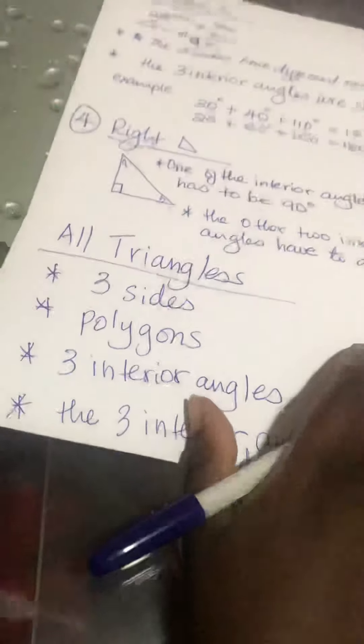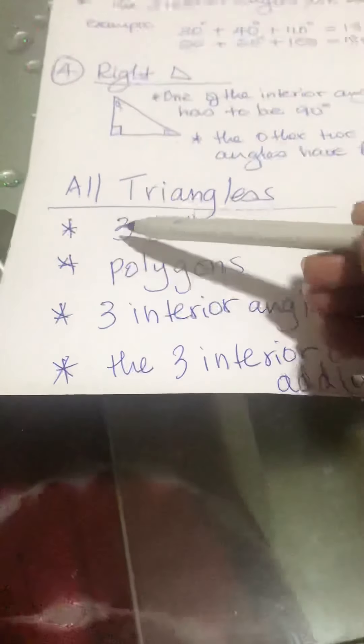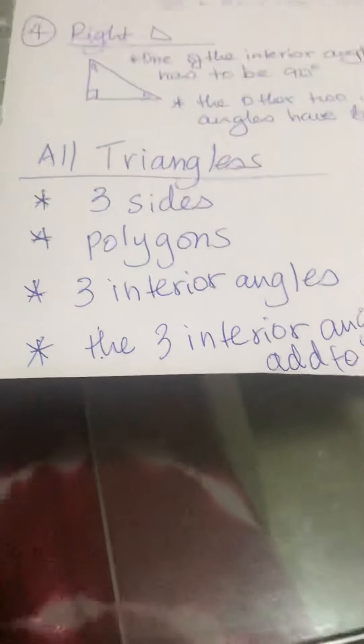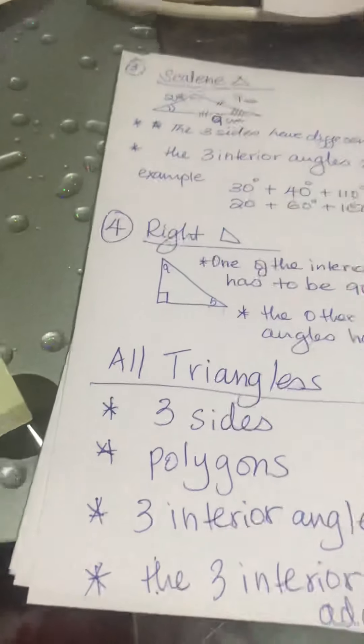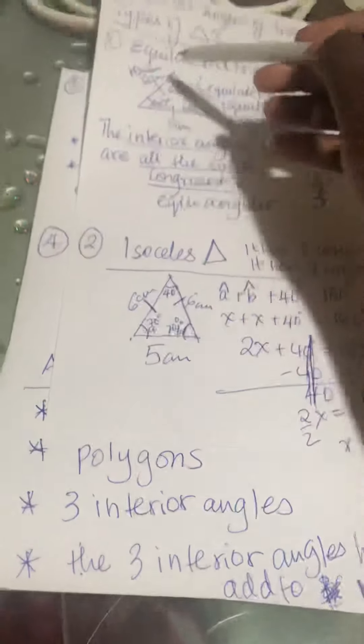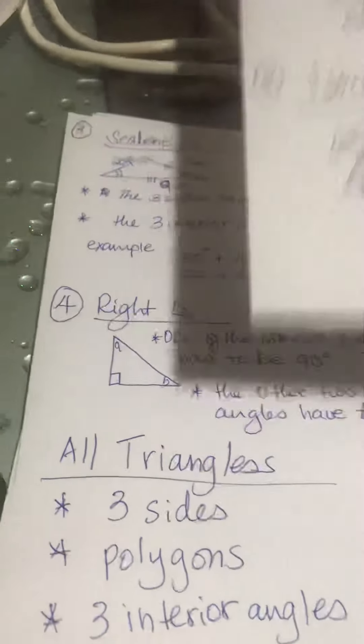So if I ask you, tell me something that is the same for all triangles, you need to give me these four points. Do we understand? So this works for right, scalene, it works for isosceles, and it works for equilateral triangle.